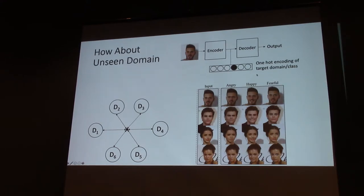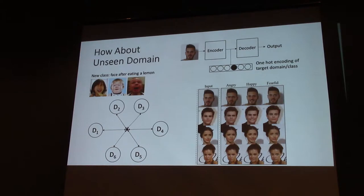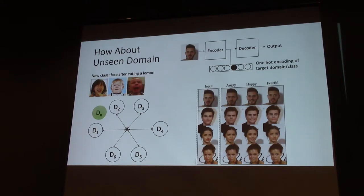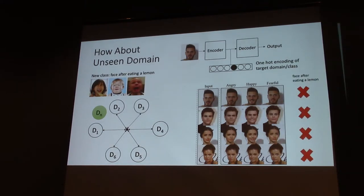But what about unseen domains? There are many other expressions a human face can have — for example, a face after eating a lemon. These are images downloaded from Google, not included in the training dataset. Ideally, you would like to translate human faces to have this expression. This is a new domain, and because multi-domain image translation networks don't consider this in their design, they cannot do it.